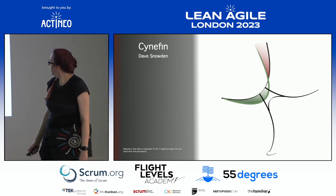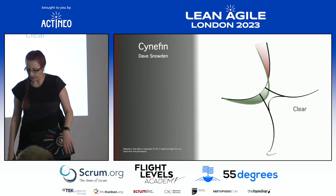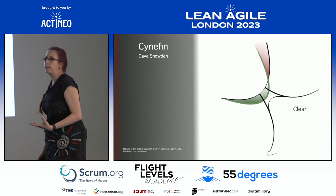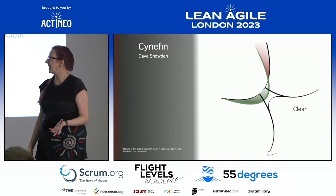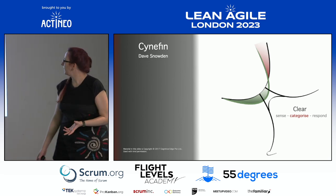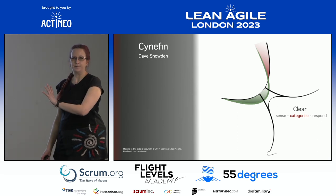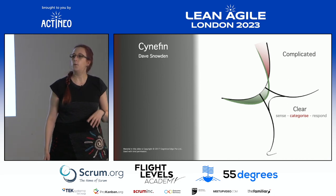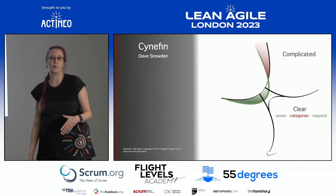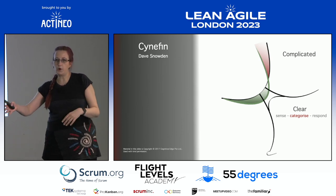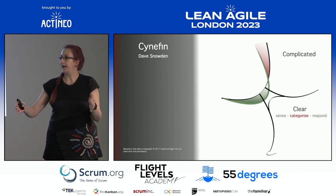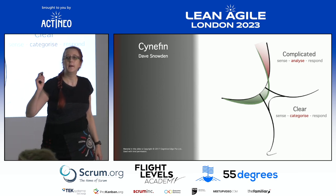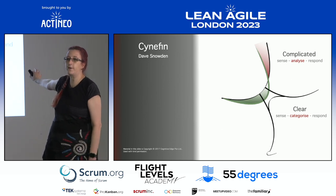The different situations we come across: the first is Clear — it used to be called Simple or Obvious. A clear problem is one that even a kid can solve; you look at it and go 'I know how to solve that.' You can categorize it and it's completely predictable. As things become more complicated they require more expertise — a watchmaker fixes your watch, a car mechanic fixes your car. The outcome is known and you can close the gap through analysis. These two together are called the ordered domains.